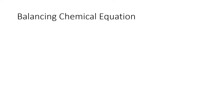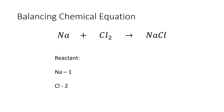Let us now balance the chemical equation for the sodium and chlorine reaction. In the reactant side, there is only one particle for sodium while there are two particles for chlorine. On the product side, there is only one sodium and one chlorine. When balancing a chemical equation, we look at the side where the particle has the least number — in this case, we focus on chlorine on the product side.